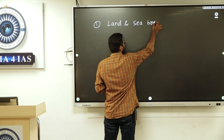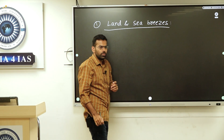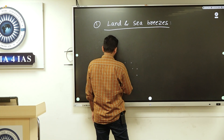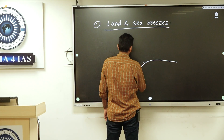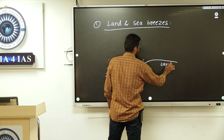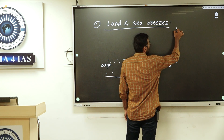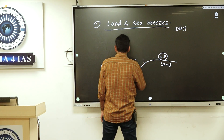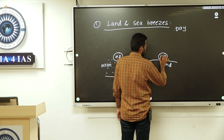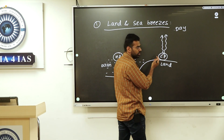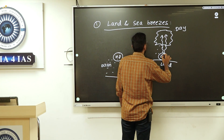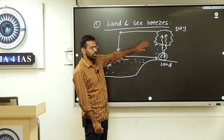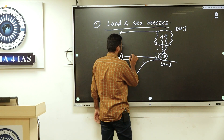Sea breezes are a type of local wind. During daytime, if this is your ocean and this is your land, you will have low pressure over land and high pressure over the ocean. If there is moisture, it can bring a little bit of rainfall. This convectional cell formed during the daytime in the coastal region is called a sea breeze.